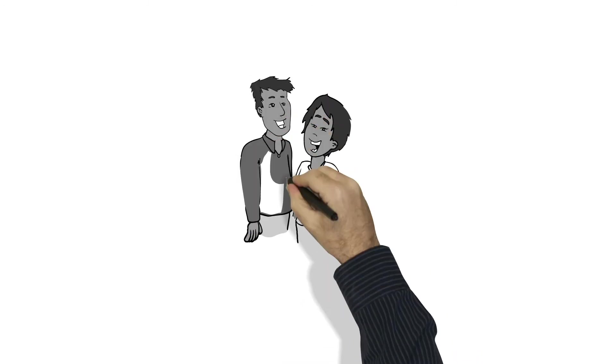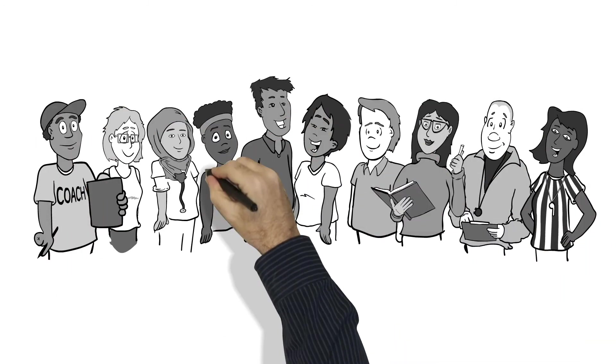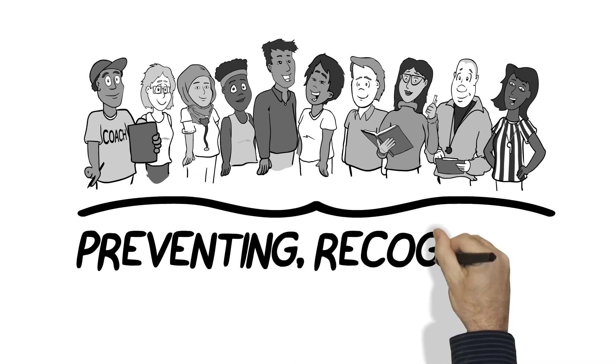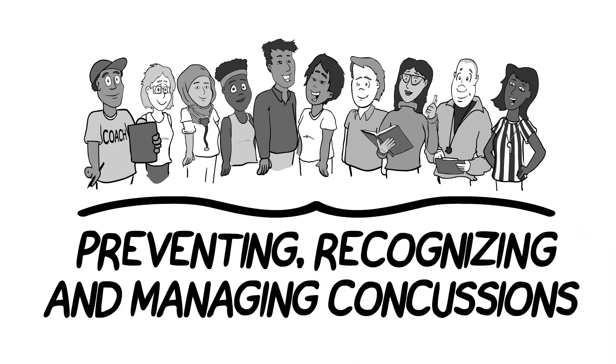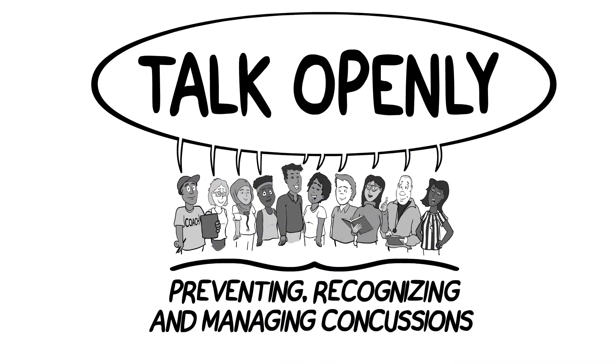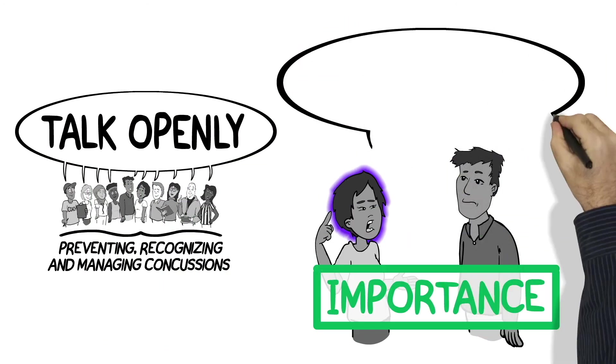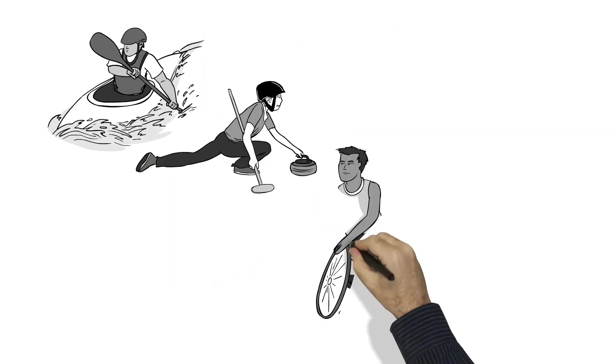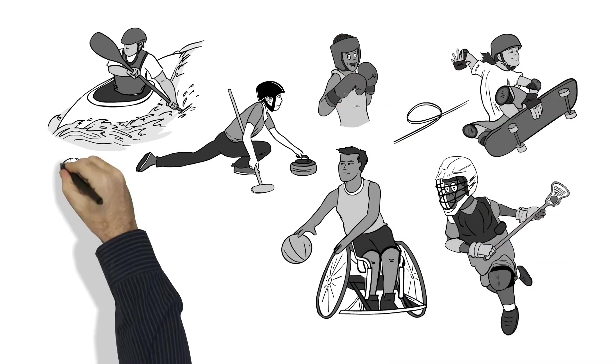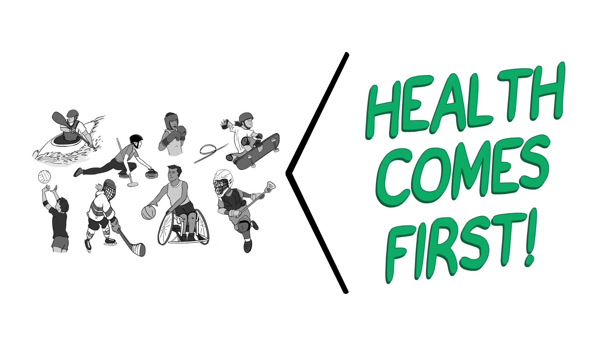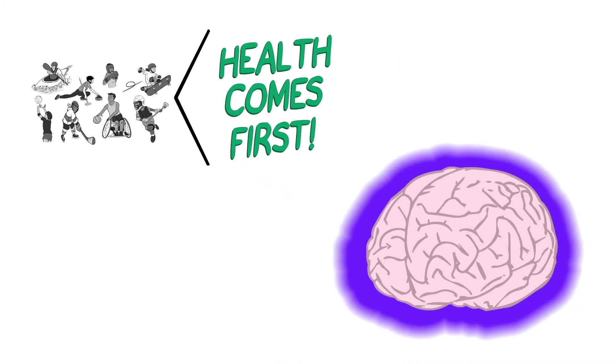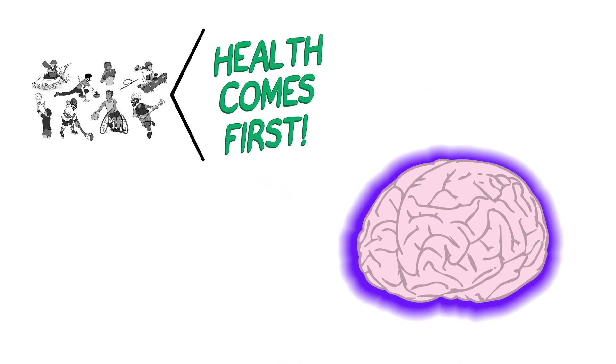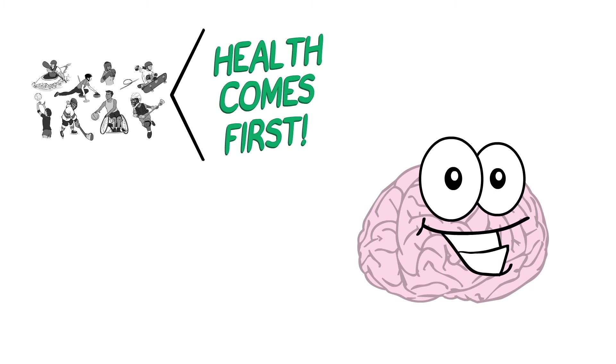Athletes, parents, coaches, team trainers, officials, and teachers all have a part in preventing, recognizing, and managing concussions. Everyone needs to talk openly and understand the importance of letting others know if something doesn't feel right. Sports, physical activity, and exercise can play a big part in our lives, but our health comes first. If we recognize a concussion early and manage it properly, the brain can heal, just like any other part of the body. A brain exhibits a very happy face.